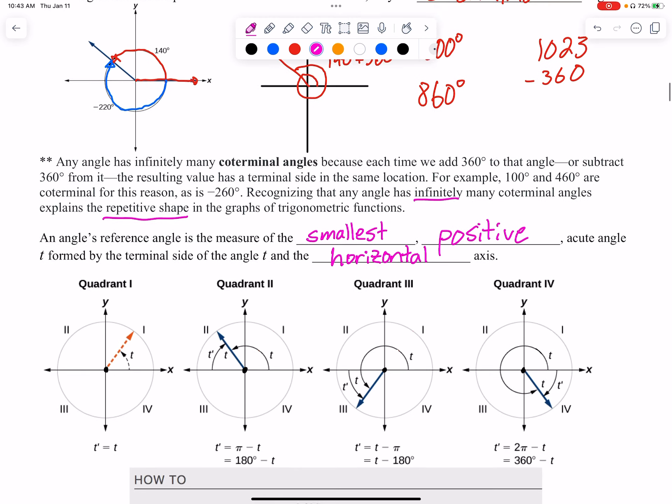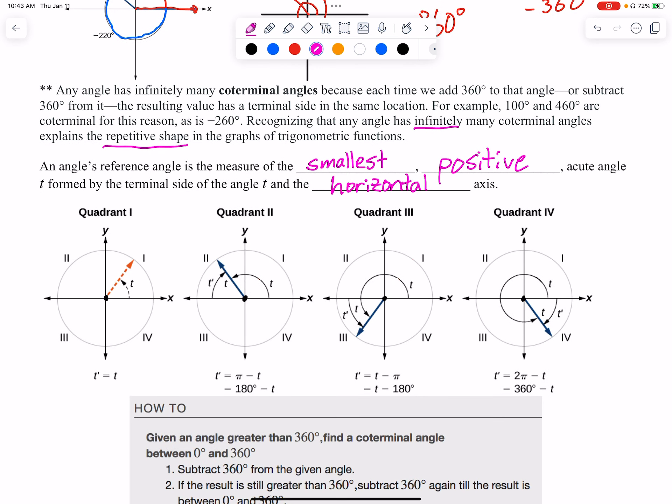All right, so how we find a reference angle. So the first one, let's focus on just quadrant one. This angle, they say, it's here in quadrant one. Well, if it's the smallest positive acute angle, well, that's just the exact same angle. So anything in quadrant one, its reference angle is the same angle.